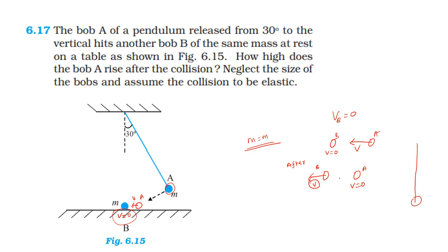Considering the height of rise after collision: since the pendulum A transfers all its velocity to ball B which is on the ground, pendulum A does not rise at all after the collision. The height of rise for bob A is zero.